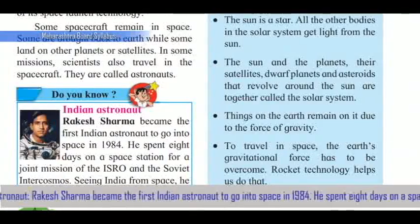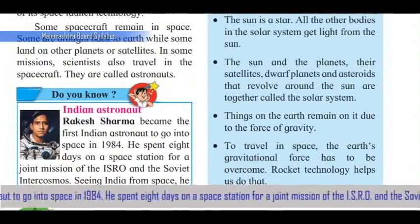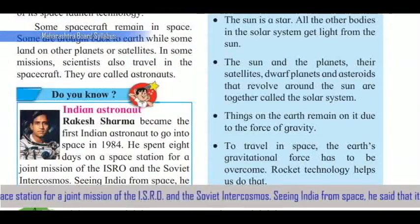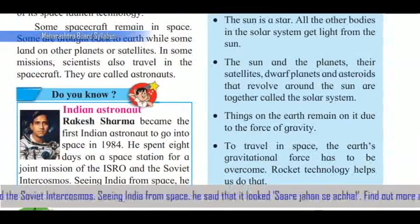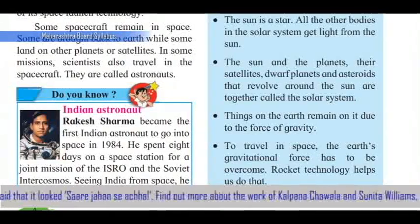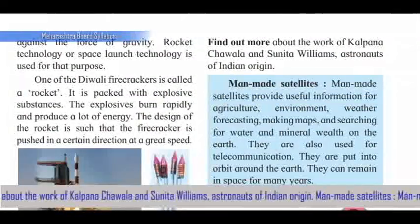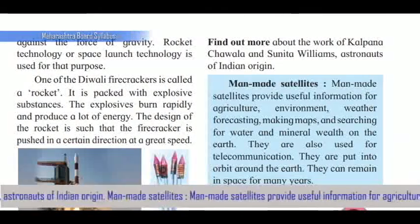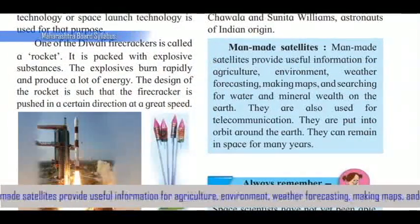Indian astronaut Rakesh Sharma became the first Indian to go into space in 1984. He spent eight days on a space station during a joint mission of ISRO and the Soviet Intercosmos program. Seeing India from space, he said it looked 'Saare Jahan Se Achha.' Find out more about the work of Kalpana Chawla and Sunita Williams, astronauts of Indian origin.